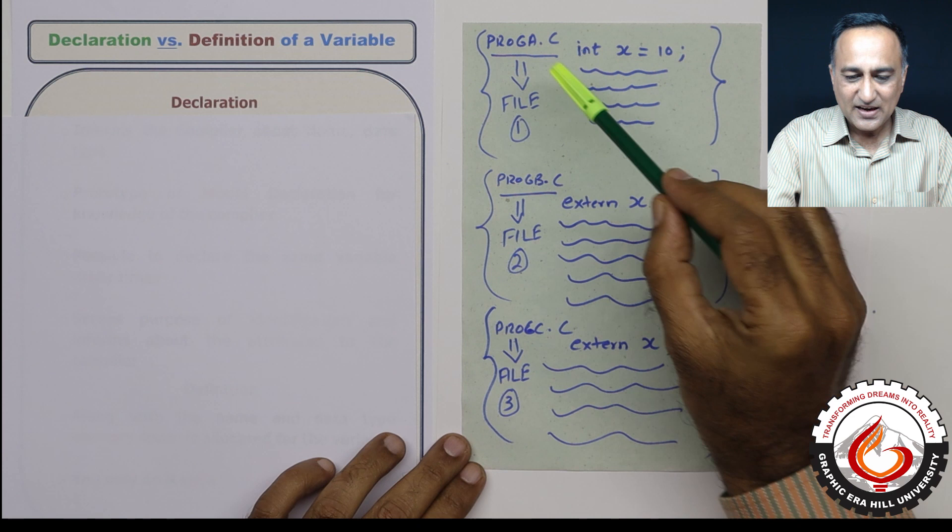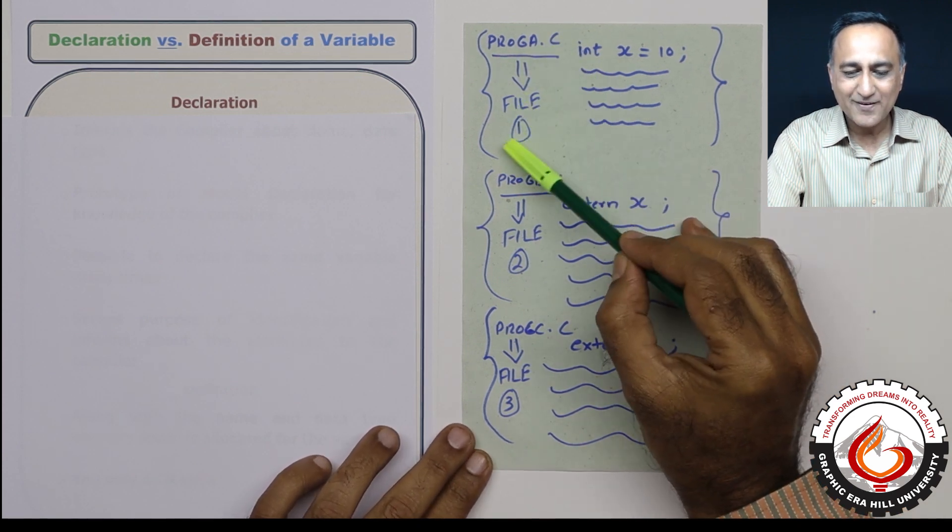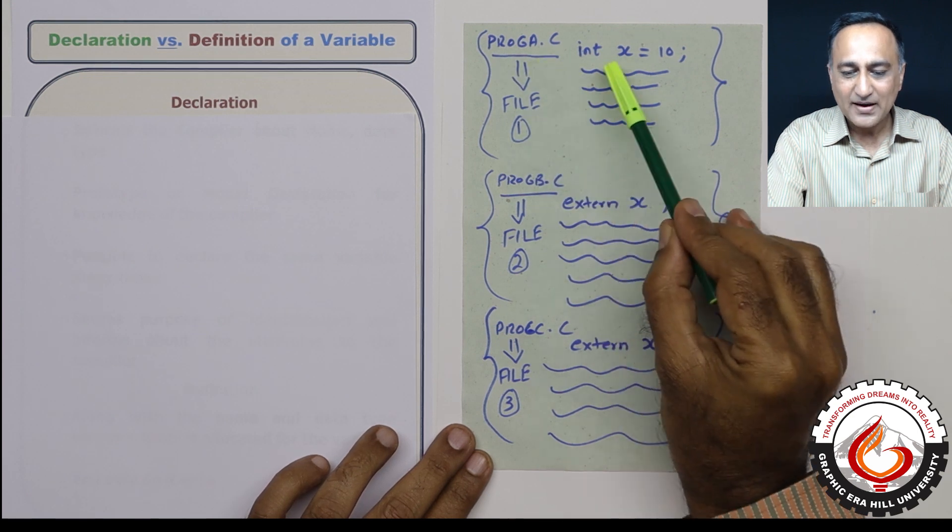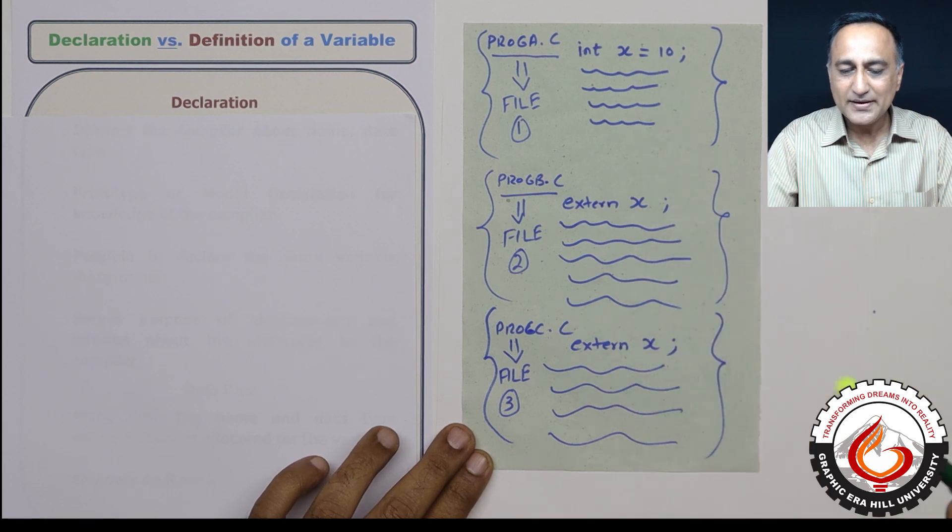Let's say I have written program a.c. This is in one file. This is a separate file. I have declared a variable x of the type integer and I have given it the initial value 10.